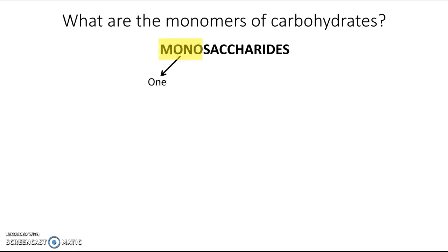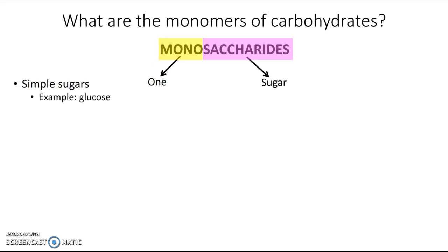This word literally means one sugar. So these are simple sugars and the classic example is a molecule called glucose. The function of monosaccharides is an immediate energy source. Cells can take in monosaccharides or sugars just as they are, without needing to break them down further, and be able to use them as instant energy.